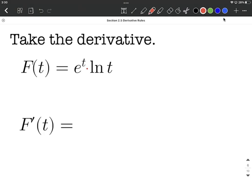So to find big F prime of t, I'm going to use the product rule. The first thing we have multiplied together here, e to the t, I'm going to treat that as g, and natural log of t is going to be h.